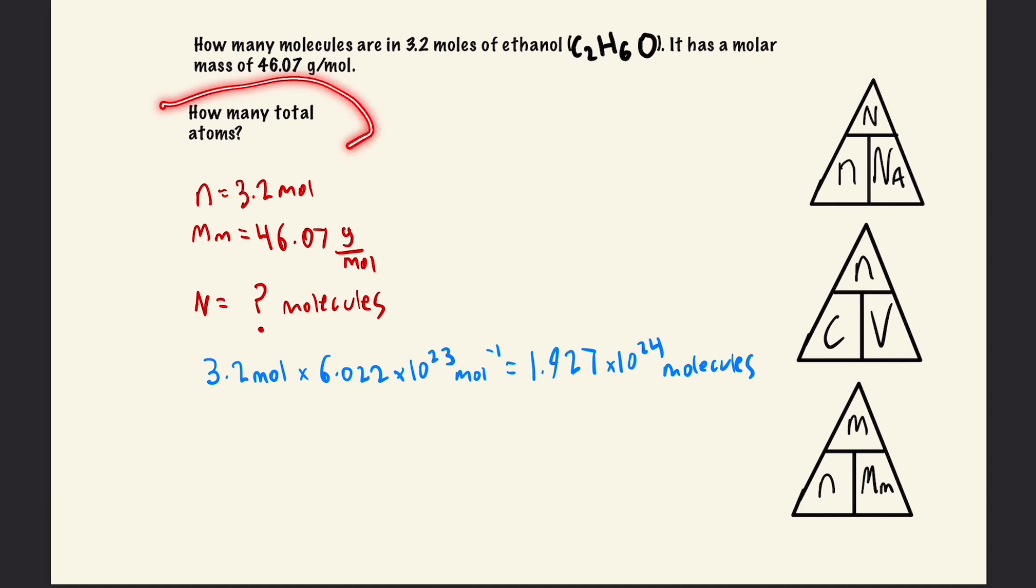But how many total atoms do we have? We have two carbons, six hydrogens, and one oxygen.